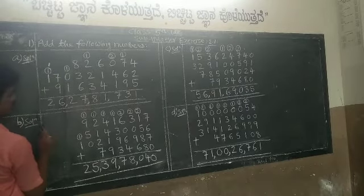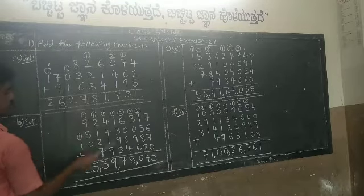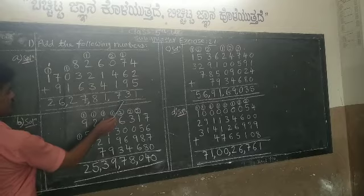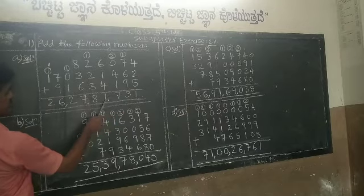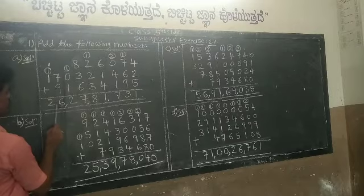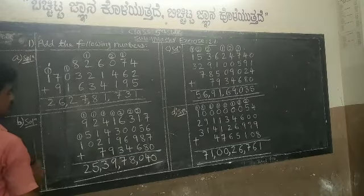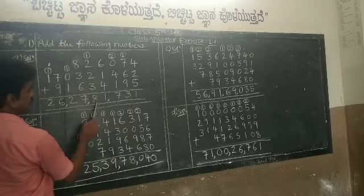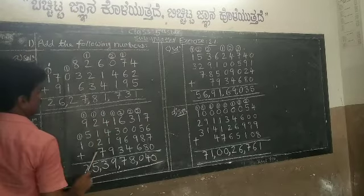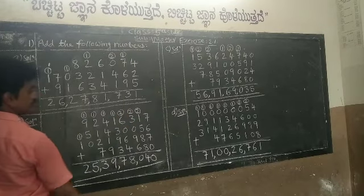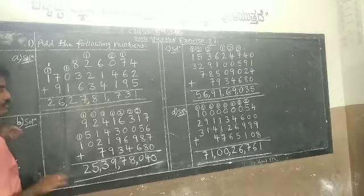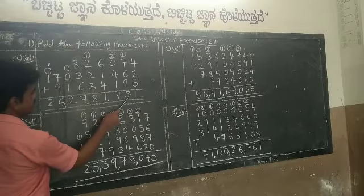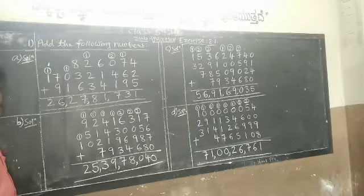To read the sum, start from the ones place. The ten-crores and crores places combined give 26 crores. The ten-lakhs and lakhs places combined give 27 lakhs. The ten-thousands and thousands places give 81,000. The hundreds, tens, and units give 731. So the full answer reads: 26 crores, 27 lakhs, 81,731.